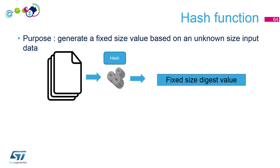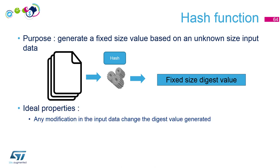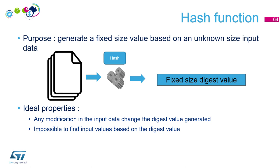This function has some ideal properties. First, any modification in the input should change the digest value — if even one bit is modified in the input file, you should get a new digest. Second, if you only have the digest, you can't find any idea of what the input was. And third, two different inputs should generate different digest values.